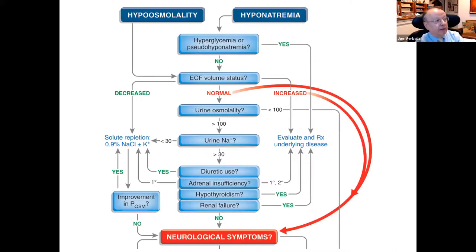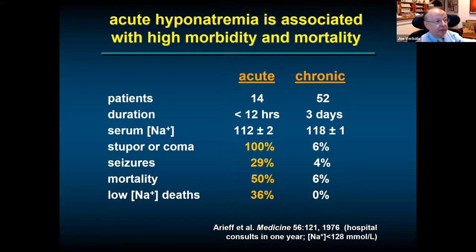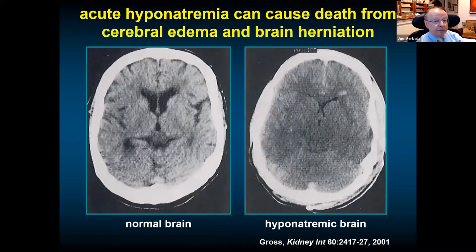Before completing the diagnostic workup, immediately evaluate neurological symptoms — this is indicated by the red arrows in the algorithm. The reason is that acute hyponatremia has very bad outcomes. In a single-hospital study from San Francisco, patients with hyponatremia of less than 12 hours duration had 100 percent coma, 30 percent seizures, and 30 to 50 percent mortality. Brain edema from water movement into the brain is responsible.